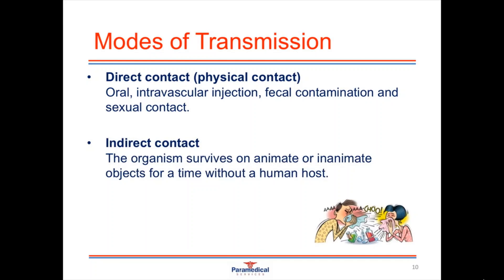Another mode of transmission is indirect contact, where something has not immediately been passed from one body source to another. For example, if somebody sneezes or coughs an infectious agent onto a table surface, and that agent can live outside the host for a while, another person could touch that surface and then touch their nose, eye or mouth — providing a portal of entry for the infectious agent. The organism needs to survive on an inanimate object for a time without a human host.